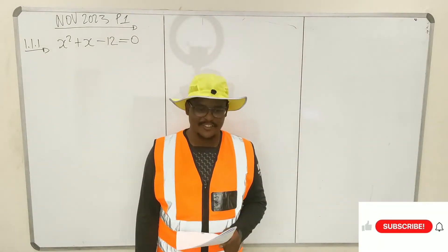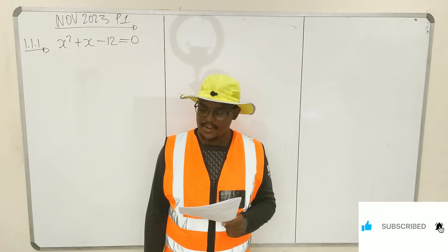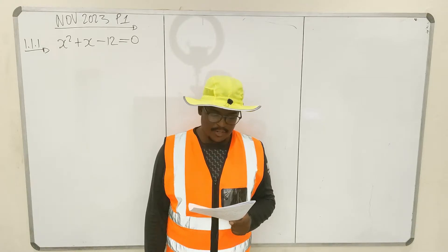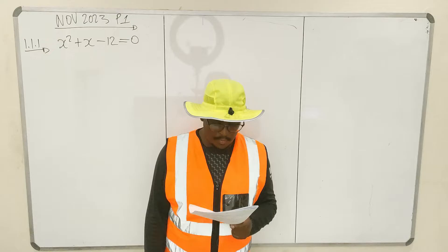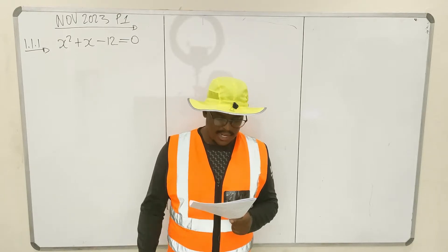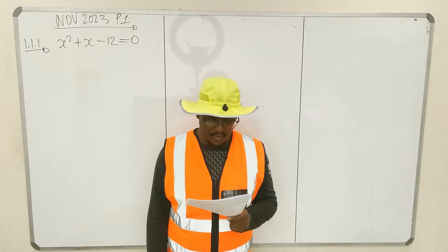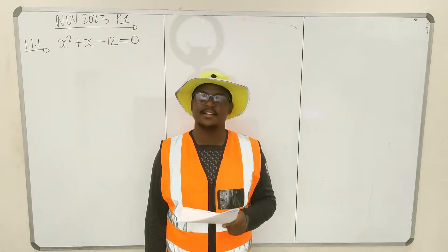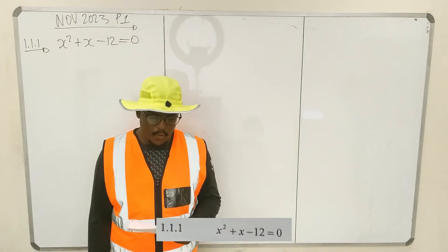Hello, thank you for watching this video. In this video, I'll be doing question 1 from November 2023, mathematics question number 1. This is solve for x. I'll start at 1.1.1 to 1.1.4 — those look like quadratic equations. Then 1.2 is simultaneous equations, and 1.3 looks like exponents. So let's go, one by one, we just follow.